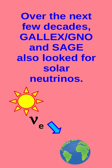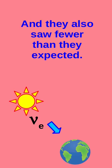Over the next few decades, other experiments, GALLEX, GNO, and SAGE, also looked for solar neutrinos, and they also saw fewer than they expected.